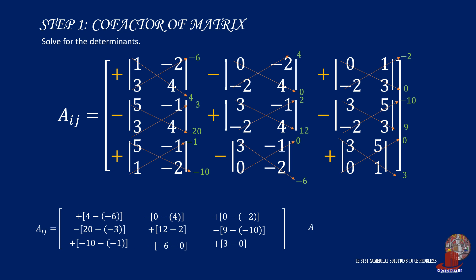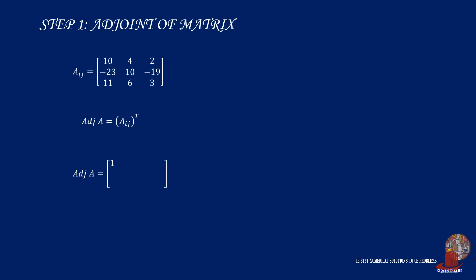Simplifying each element of the cofactor matrix, A sub ij has elements 10, 4, and 2 for the first row. Then negative 23, 10, and negative 19 on the second row, with negative 9, 6, and 3 on the last row. Having known the cofactor matrix, we can compute for the adjugate of the matrix by taking its transpose. With the numerator of the inverse matrix already figured out, we can compute for the determinant next.